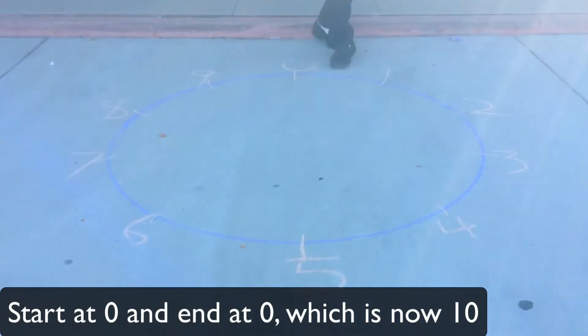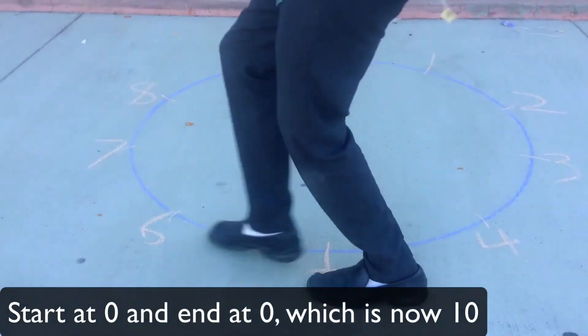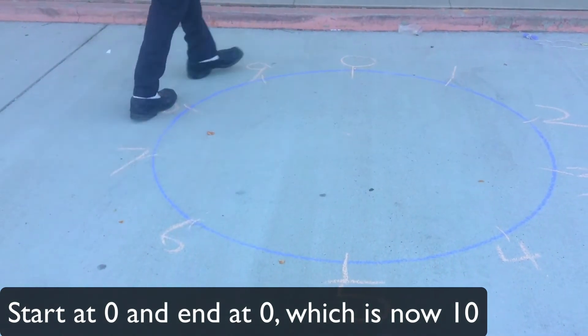We have a number wheel that goes around one, two, three, four, five, six, seven, eight, nine, and zero.